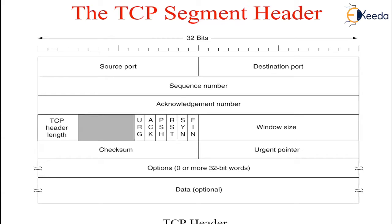The RST bit is used to reset a connection because it has received a confusion due to a host crash or some other reason. This bit is also used to reject an invalid segment or refuse an attempt to open the connection.